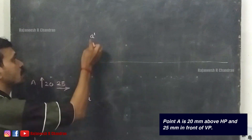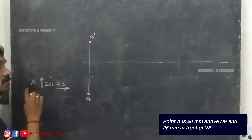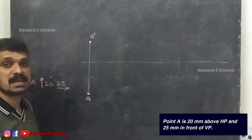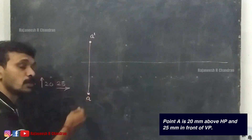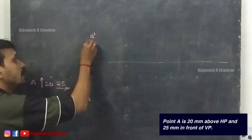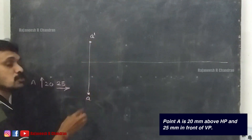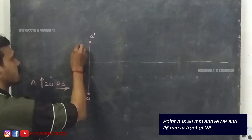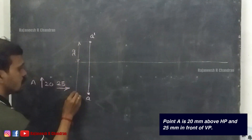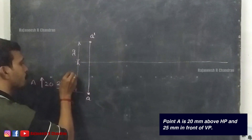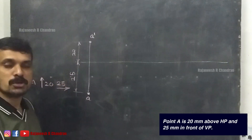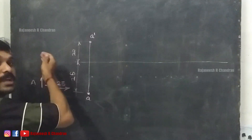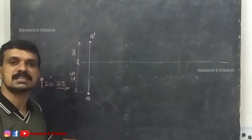This is the projection of point A. Remember, only these two points — A dash and A — should be darker. All the other things are construction lines. The projector line is a construction line and should be drawn with a 2H pencil. Make sure you mark the dimensions: this is 20 and this is 25. Once you understand the point above HP and in front of VP, all the other things can be drawn very easily.